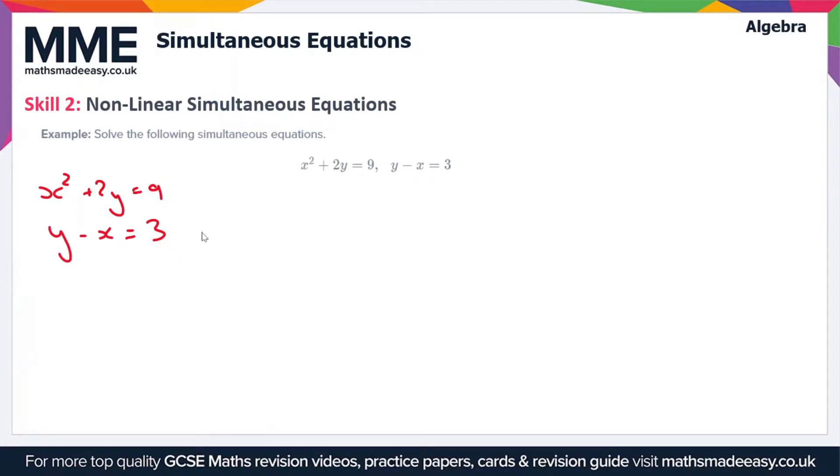This is going to give us two solutions as it's quadratic. But first, we need to rearrange this to make y the subject, so we get y = x + 3. We'll call this equation 2 and the other one equation 1. We're going to substitute equation 2 into equation 1, so we're left with